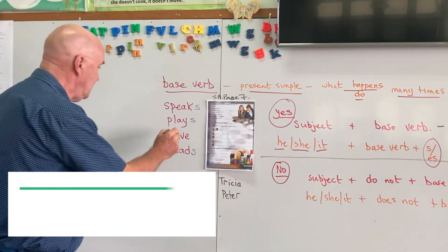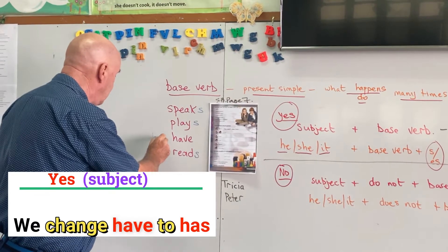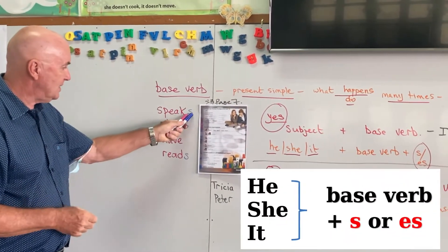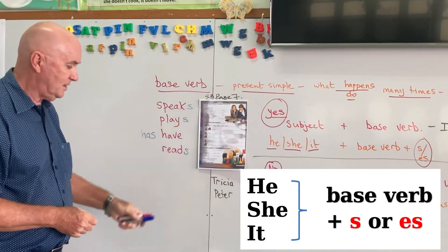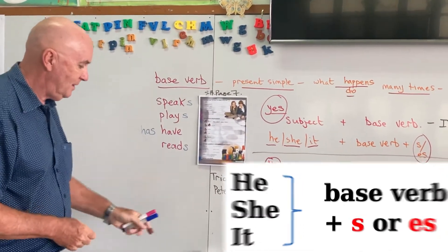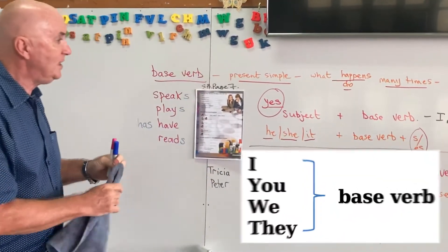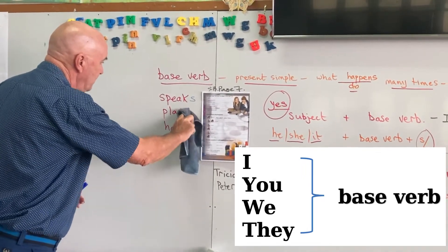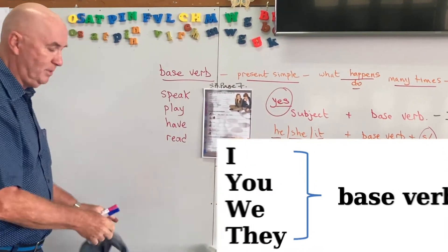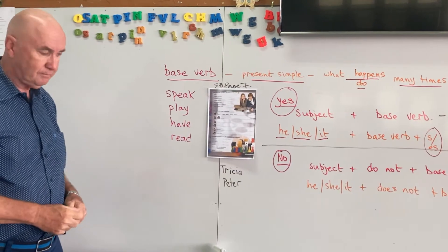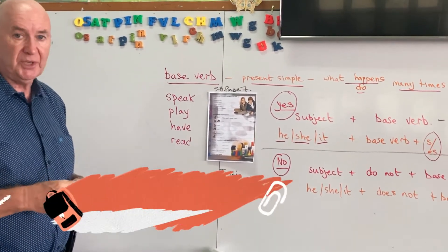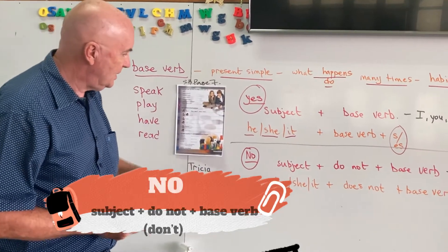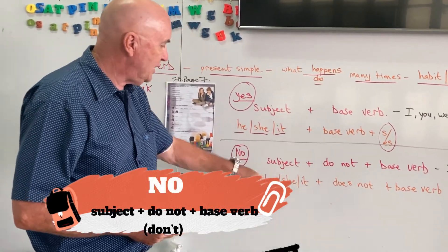Have is a difficult one because we change 'have' to 'has' only if the subject is he, she, or it. If the subject is I, you, we, or they, then we just use the base verb 'have'.